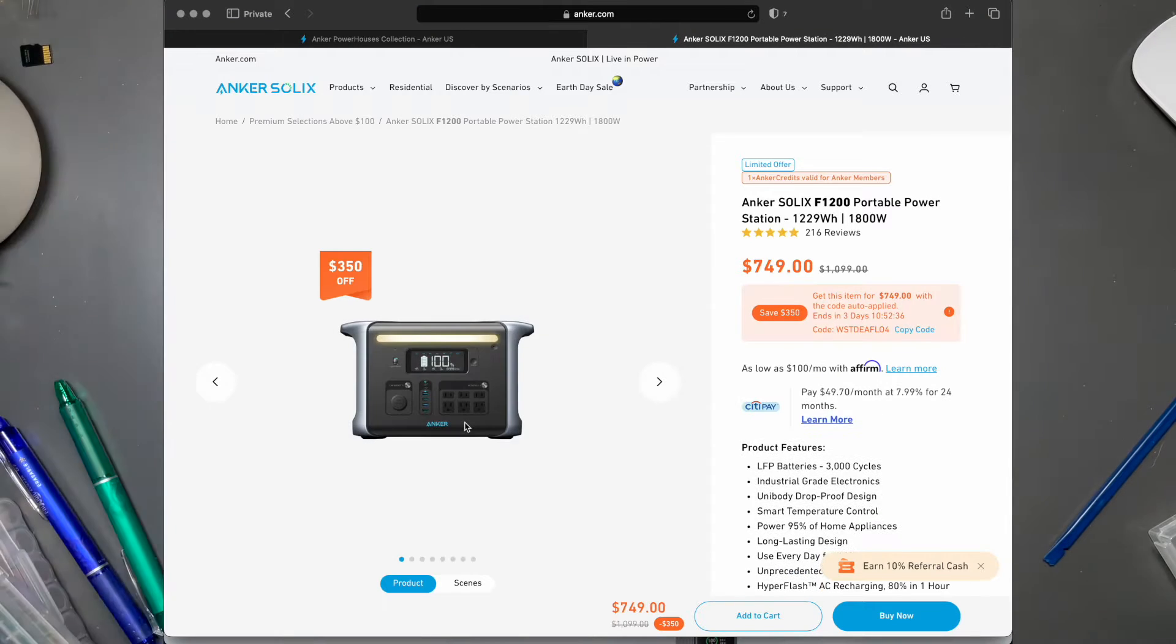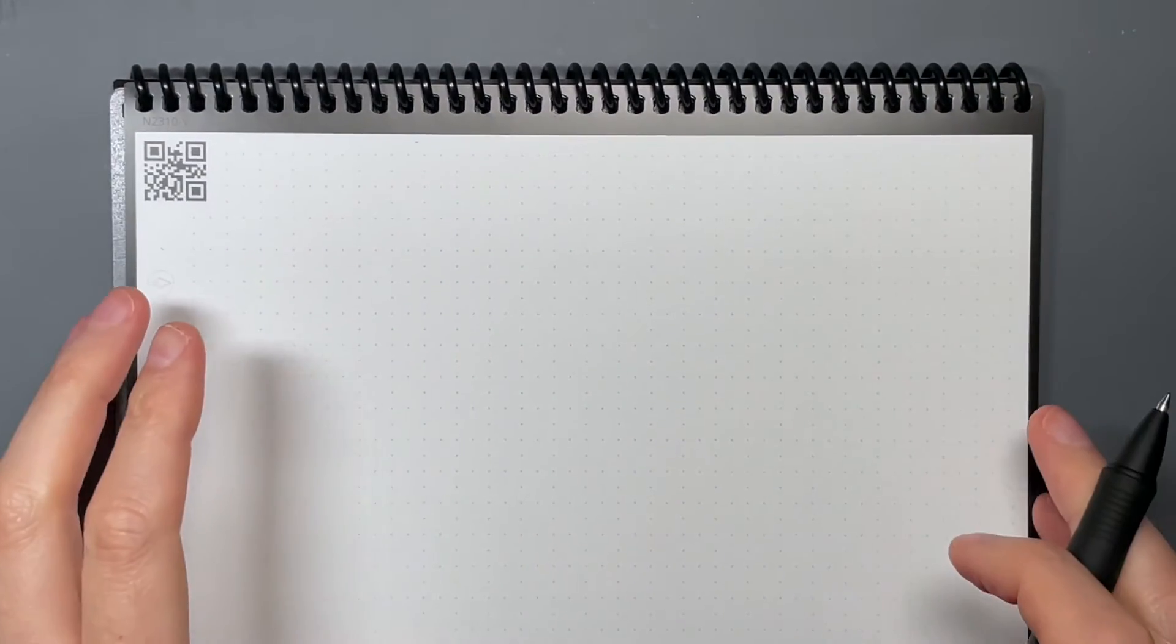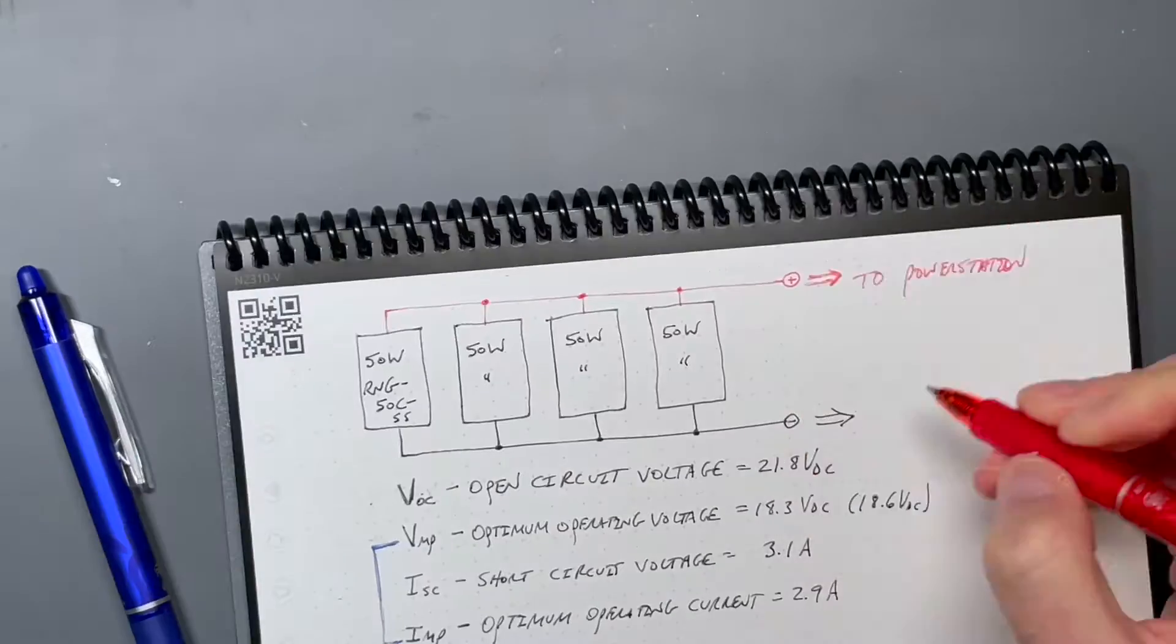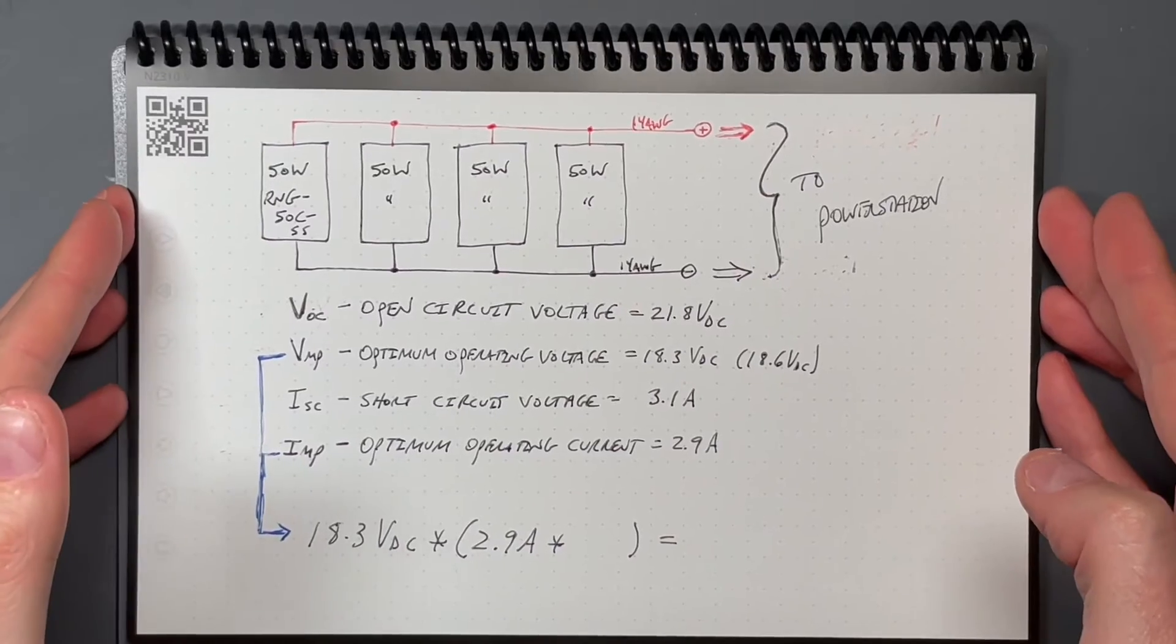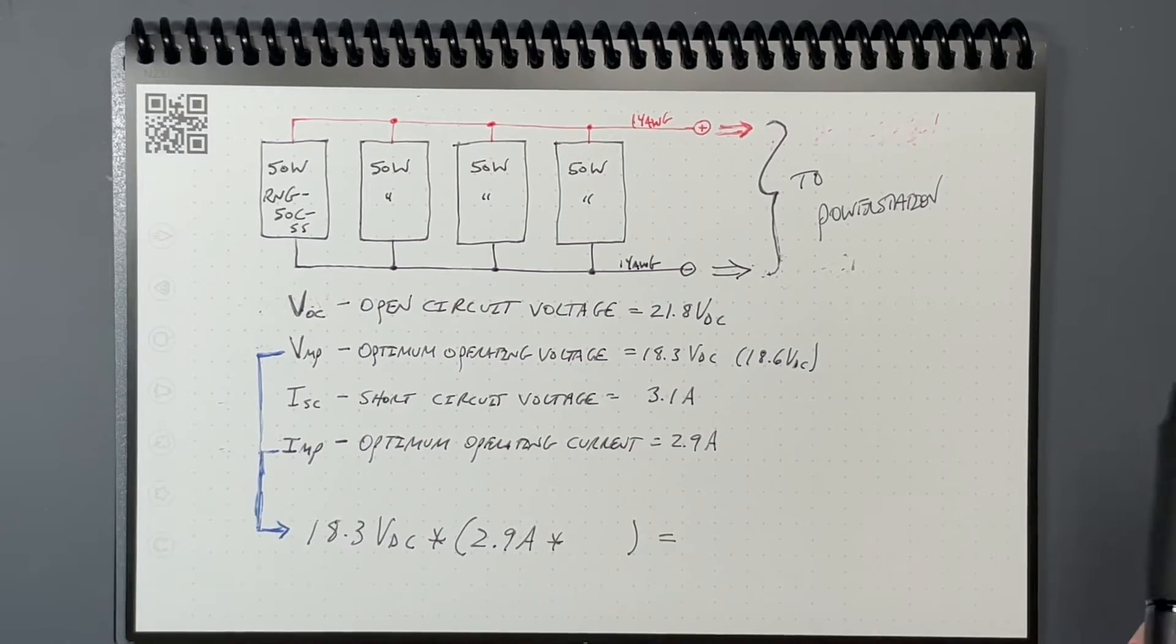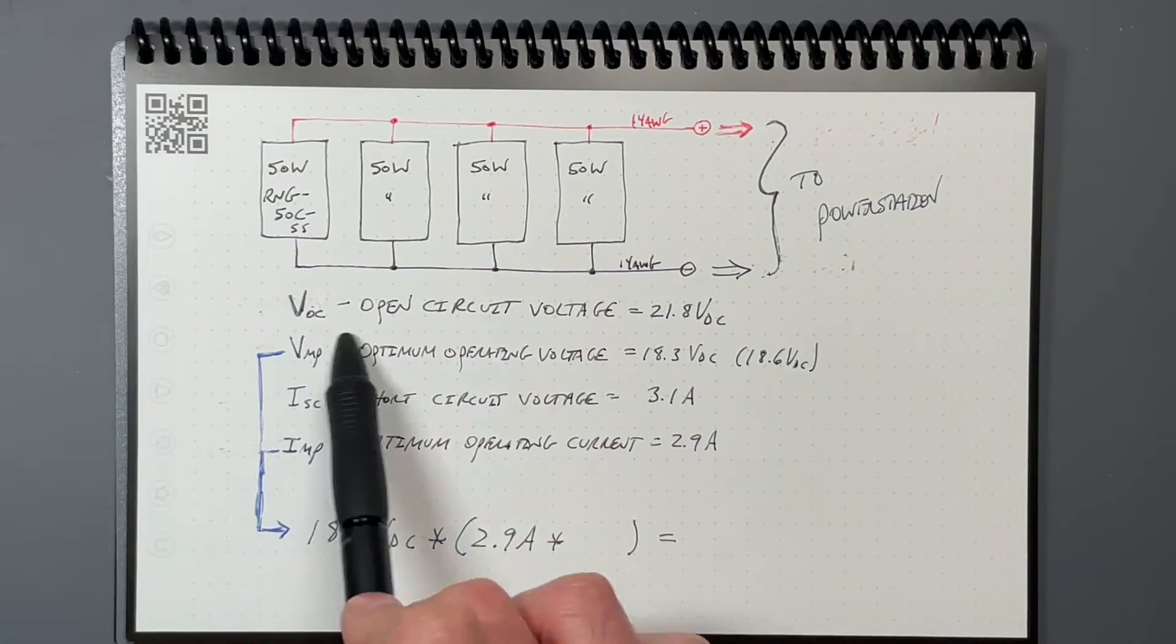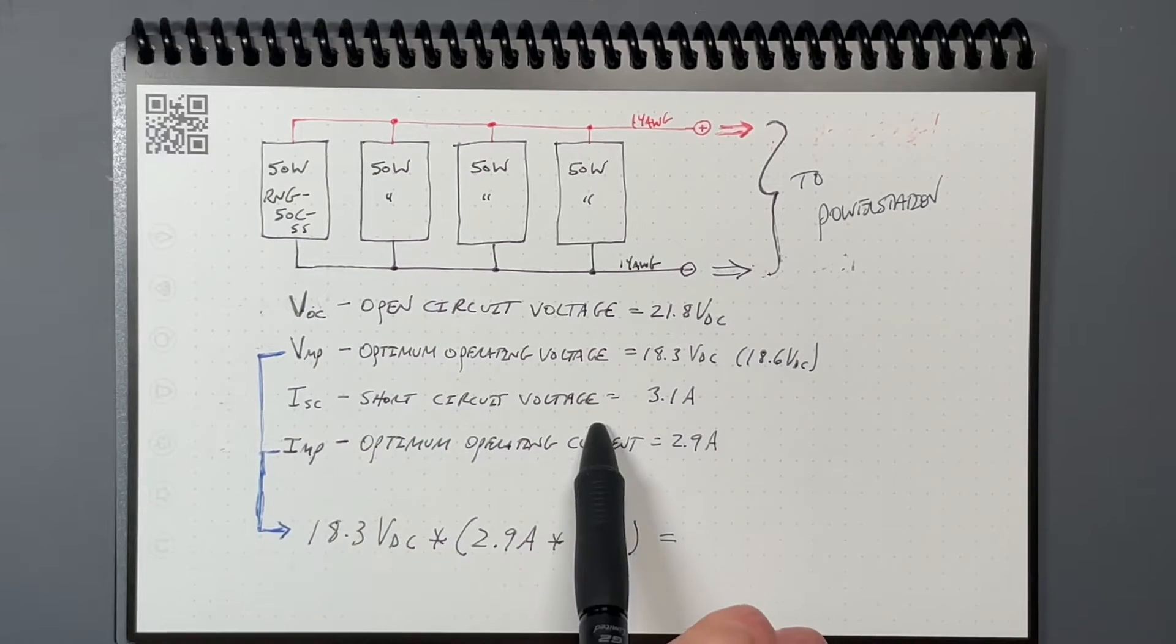So the first thing is I'm just going to do a quick description of my solar setup. The setup that I have is four 50-watt panels. I have them all wired in parallel. The amount of current they can provide to the power station adds. The voltages all stay the same, so each one of these panels has an open circuit voltage of 21.8 volts DC.